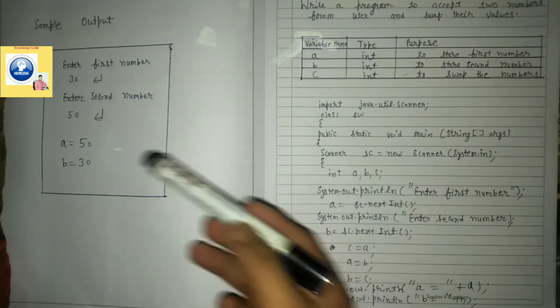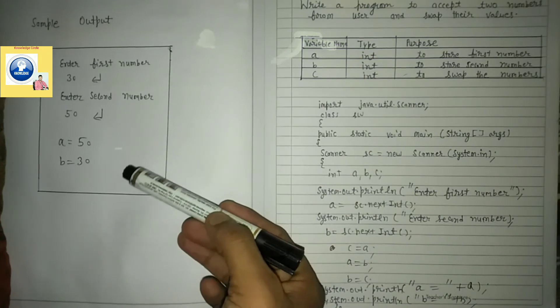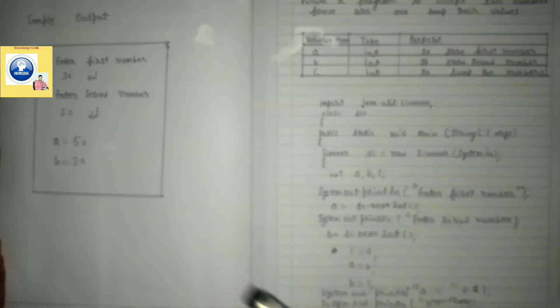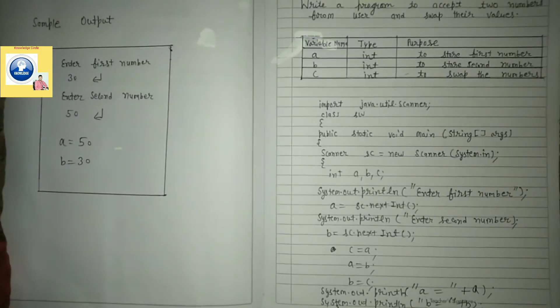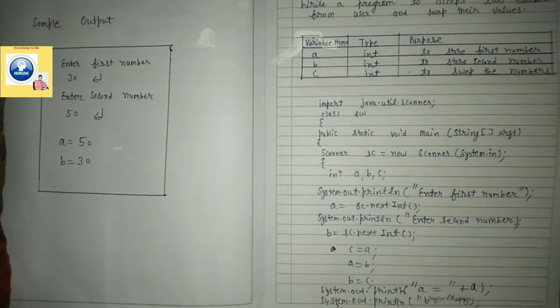then you will write the output at the left side. You can see I have written sample output. I have given some values and I have displayed the output. If your program contains more than one page,